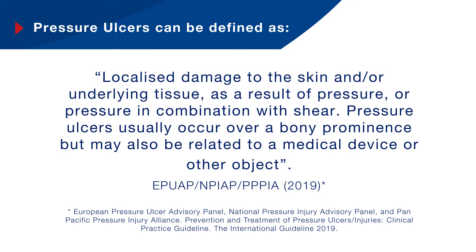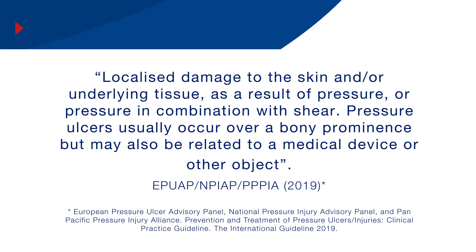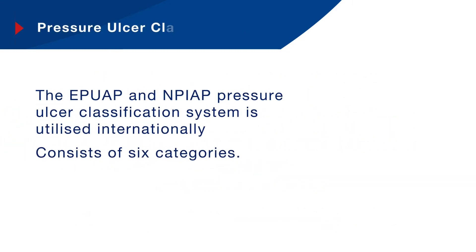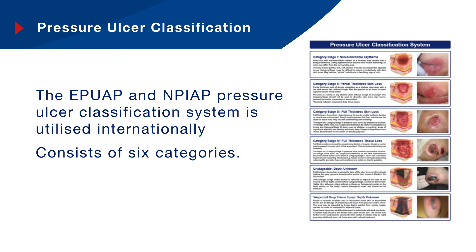To allow for continuity of care, a reliable tool is important when communicating the status of a pressure ulcer. Therefore, a recognised pressure ulcer classification system is essential, and this allows us to correctly identify and classify pressure-related tissue damage. The EPUAP and NPUAP pressure ulcer classification system is utilised internationally and consists of six categories. I will go through each of these categories in turn.